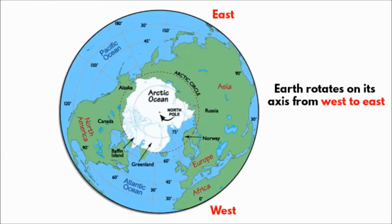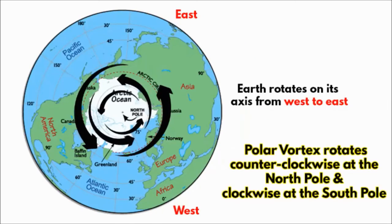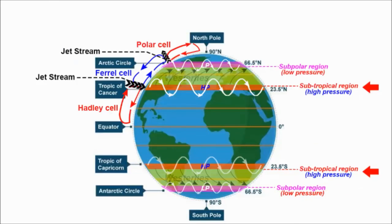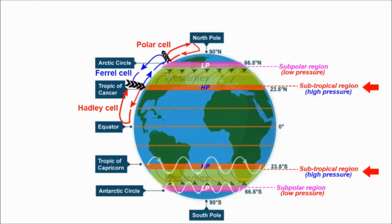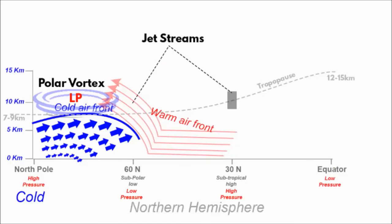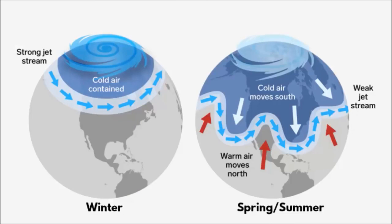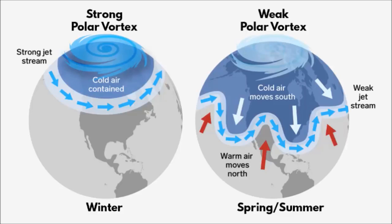Now there are two jet streams: one sits at the subtropical region and the other sits at the subpolar region. The subpolar jet stream keeps this polar vortex bottled up. Think of the subpolar jet stream as a gate that holds this cold air to the north. If this gate weakens, the cold air can escape into the lower latitude regions. The jet stream is strongest during the winter, when the temperature difference is greatest. During the summer, when the temperature difference between the air masses is smaller, the winds of the jet stream are weaker. Similarly, the polar vortex is stronger in the winter and weakens in the summer.